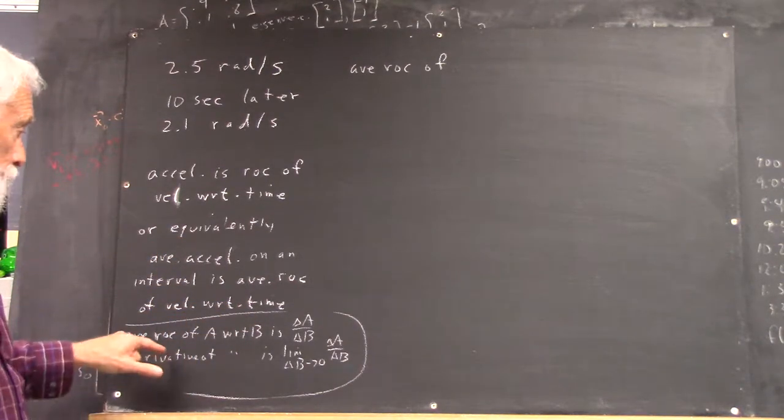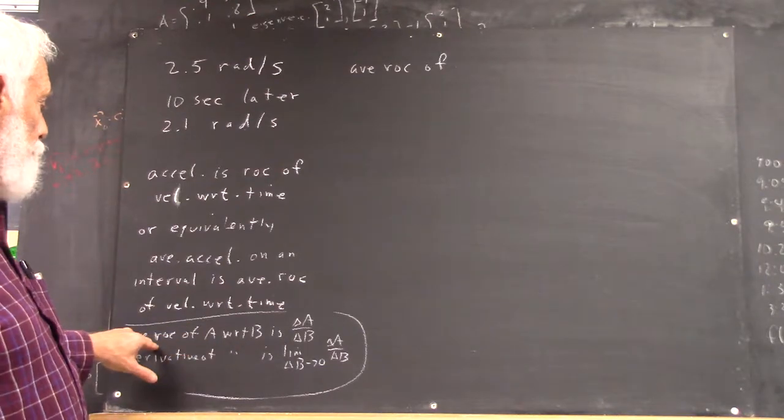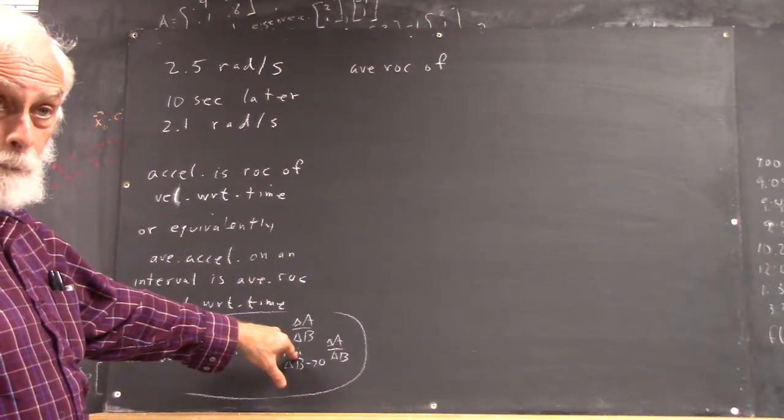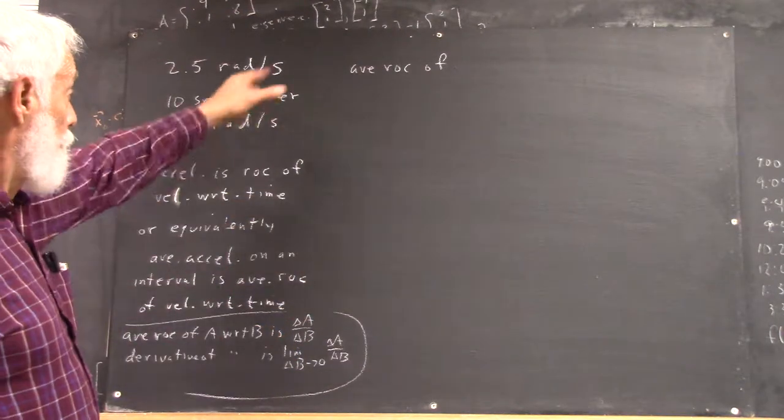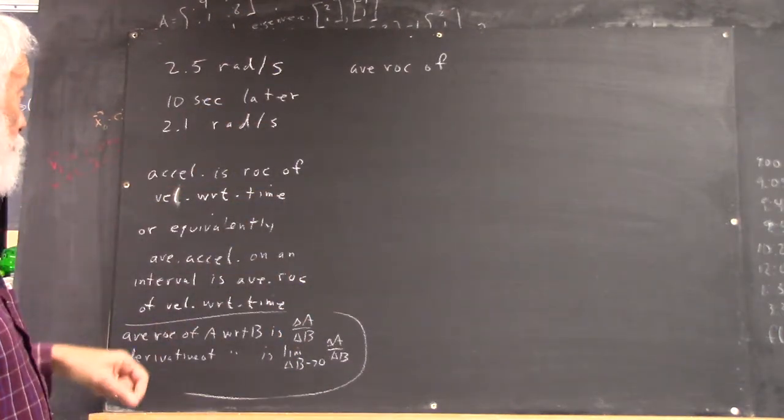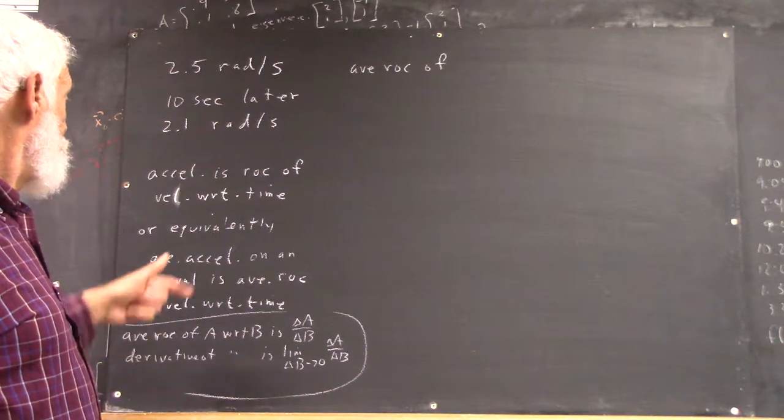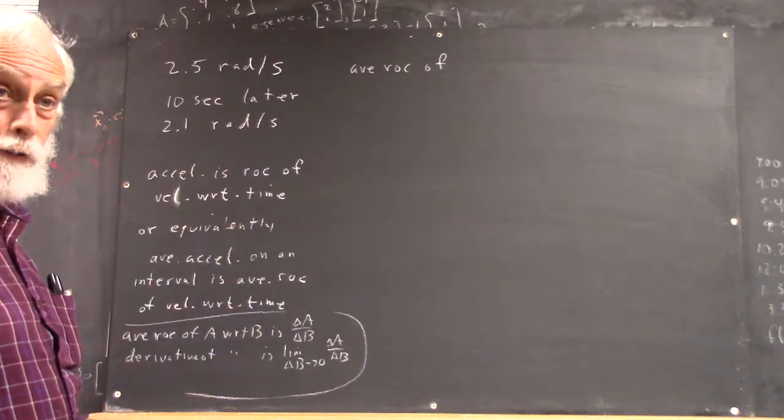Now, review of average velocity. Average velocity, or average rate of change of A with respect to B, is change in A divided by change in B, right? Well, we can apply that here immediately. The average rate of change of velocity with respect to time is acceleration.